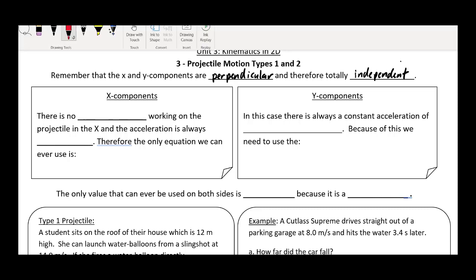If you think back to our conversations, what we noticed about projectiles is the X components have no net force. There's no net force working on the projectile in the X direction, so the acceleration is always zero. If the acceleration is zero, then you're going at a constant velocity. So the only equation you can use in the X direction is VX equals VX naught. No acceleration means constant velocity means life is really simple.